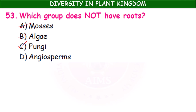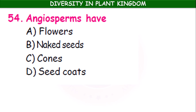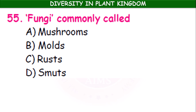Mosses, algae, and fungi have no true roots. Some forms have flowers and seed cones, while others have flowers and seed coats. Fungi examples include mushrooms, moulds, rusts, and smuts.